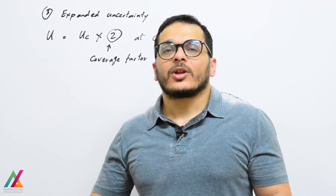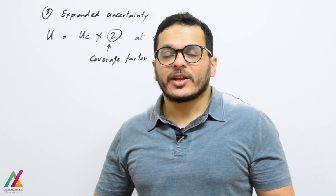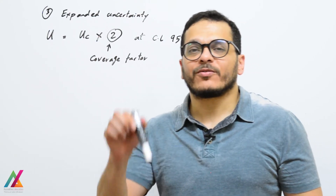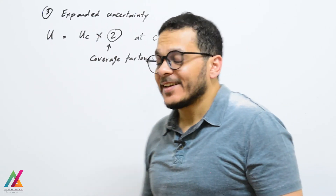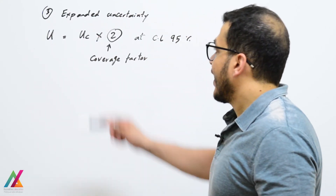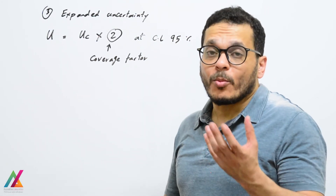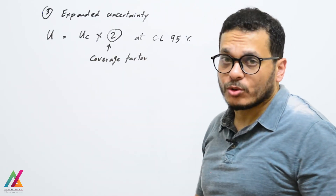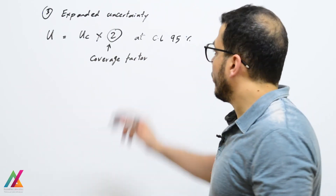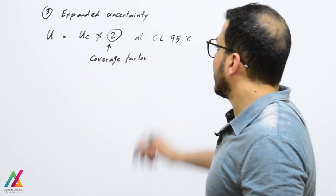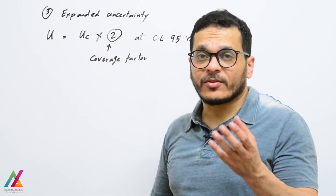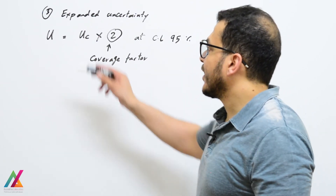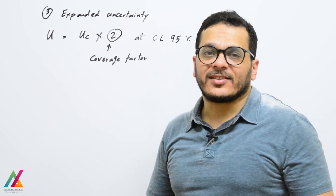You then calculate the overall or expanded uncertainty, which equals the combined uncertainty multiplied by the coverage factor of 2 (at 95% confidence level). This expanded uncertainty is added to the final result.